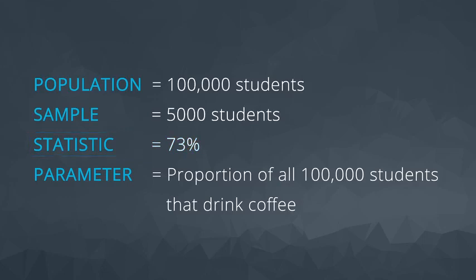A numeric summary of the population is known as a parameter. In our case, we don't know this value, as it's a number that requires information from all Udacity students. Drawing conclusions regarding a parameter based on our statistics is known as inference.